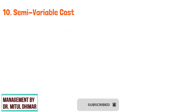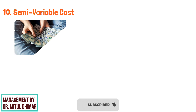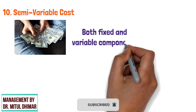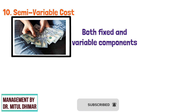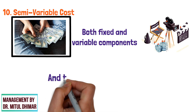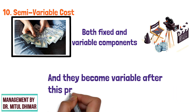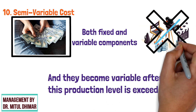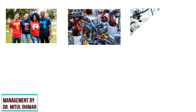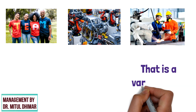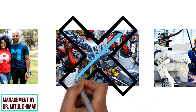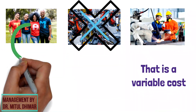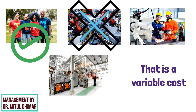Number 10: Semi-variable Cost. It is a cost composed of a mixture of both fixed and variable components. Costs are fixed for a set level of production or consumption and become variable after this production level is exceeded. If no production occurs, a fixed cost is often still incurred. For example, labor might be a semi-variable cost. If you produce more cars, you need to employ more workers — that is a variable cost. However, even if you don't produce any cars, you may still need some workers to look after an empty factory.